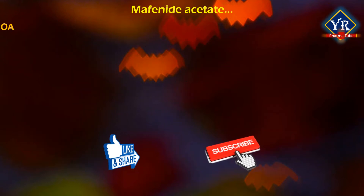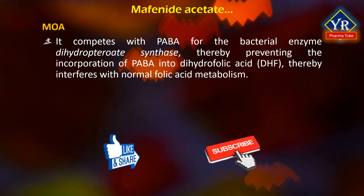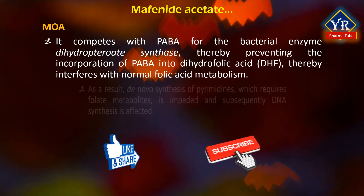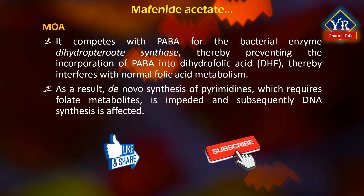Mafenide competes with PABA for the bacterial enzyme dihydropteroate synthase, thereby preventing the incorporation of PABA into dihydrofolic acid, thereby interfering with normal folic acid metabolism. As a result, de novo synthesis of pyrimidines, which requires folate metabolites, is impeded and subsequently DNA synthesis is affected.